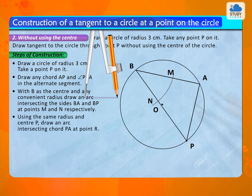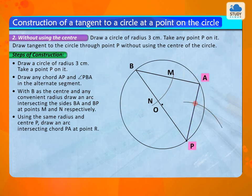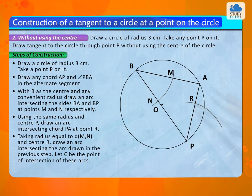Using the same radius and center P, draw an arc intersecting chord PA at point R. Taking radius equal to distance between M and N and center R, draw an arc intersecting the arc drawn in the previous step. Let C be the point of intersection of these arcs.